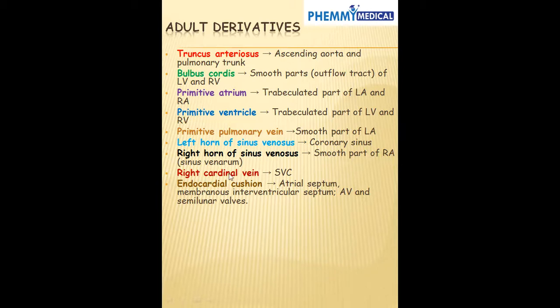The right cardinal vein forms the superior vena cava. Our endocardial cushion is going to form the atrial septum, membranous interventricular septum, along with the valves.